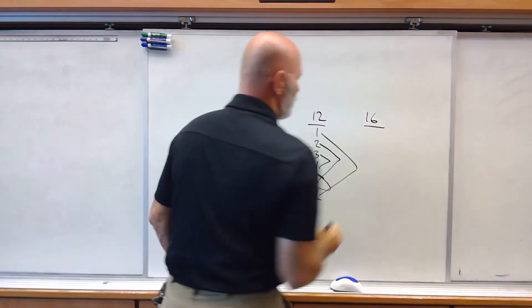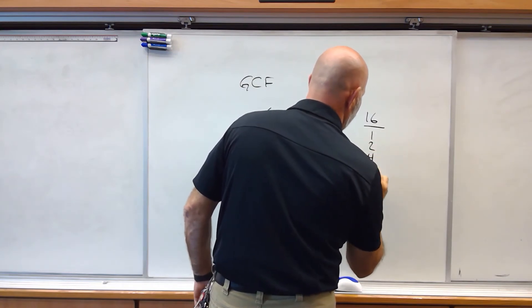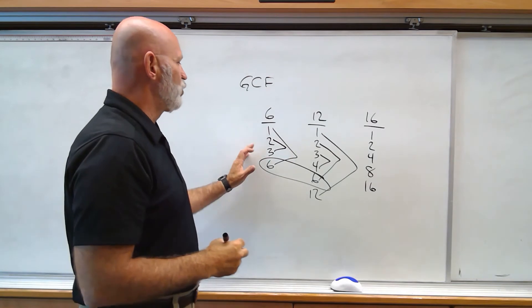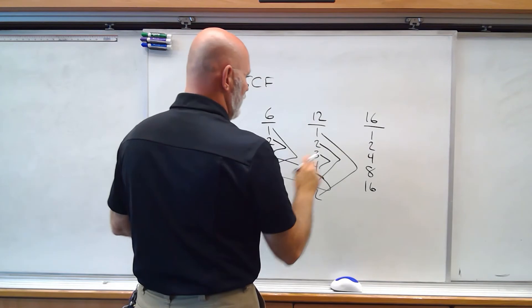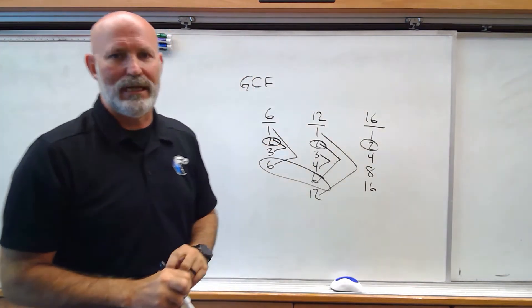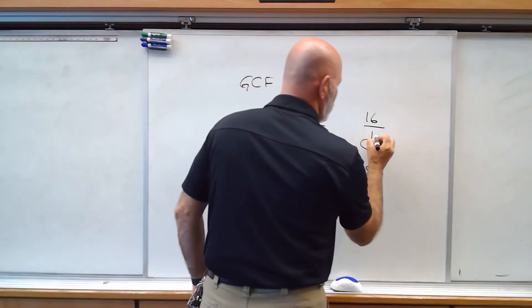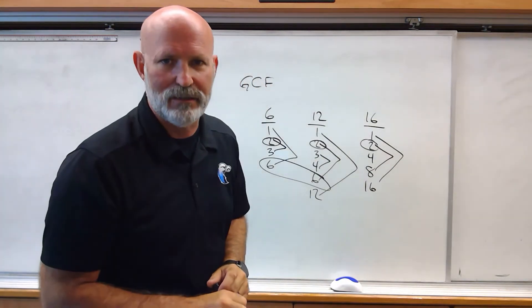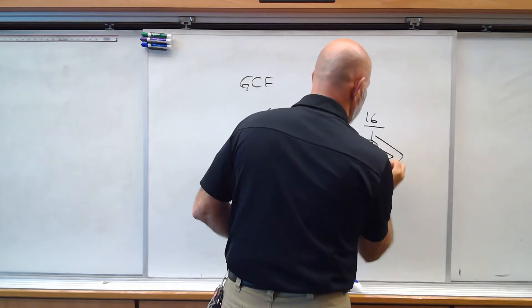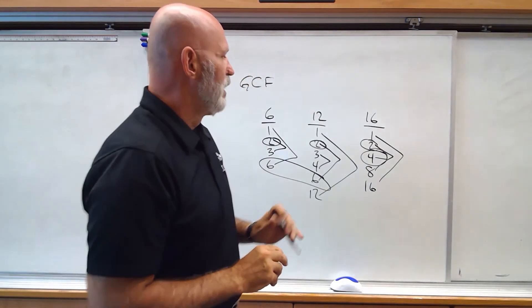Now let's look at 16. I want to factor that out. So we've got 1, 2, 4, 8, and 16. Now if I want to do the greatest common factor of all three of these numbers — 6, 12, and 16 — the greatest common factor is going to be 2, because 2 is the largest number that will go into all three of these numbers evenly. And using the same trick: 1 times 16 is 16, 2 times 8 is 16, and 4 times 4 is 16 — that is its square root. If you have an odd number left out and you know it's not the square root, then you've missed a number. Otherwise, it is most likely the square root.